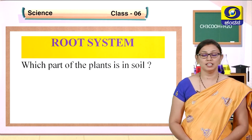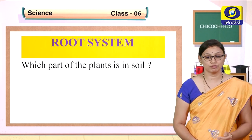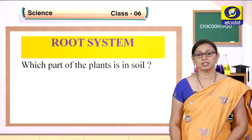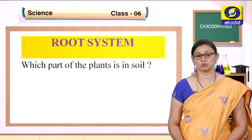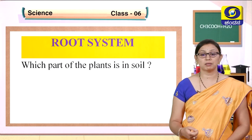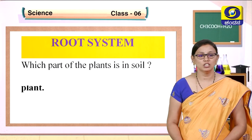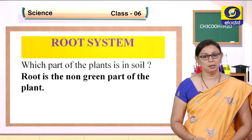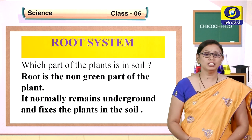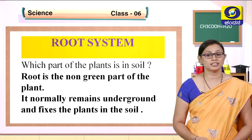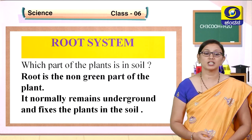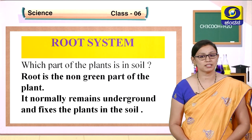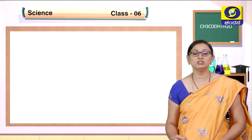As you know, we have been studying the different types of systems in the plant — one is called the root system and another is called the shoot system. The root is attached to the soil. The root is a non-green part of the plant that normally remains underground and fixes the plant in the soil. Roots are below the ground.